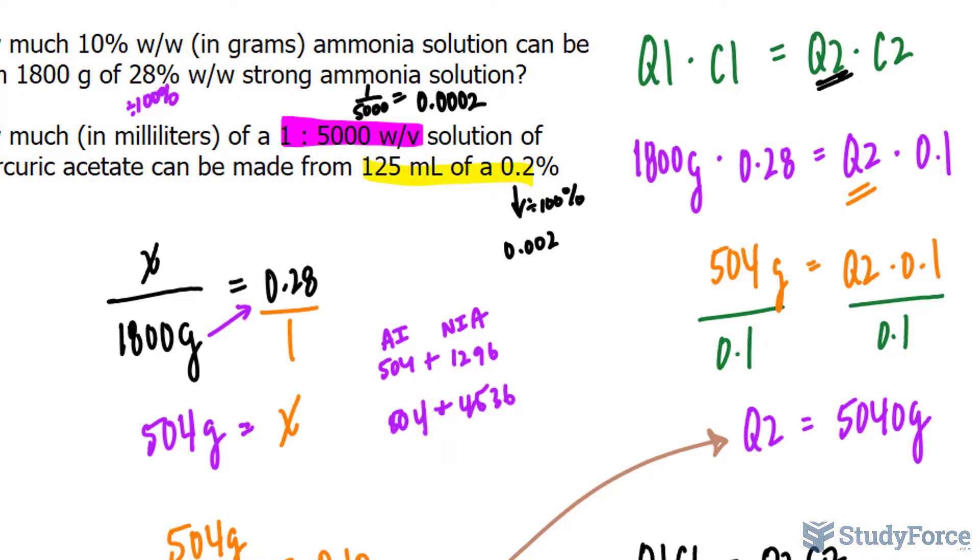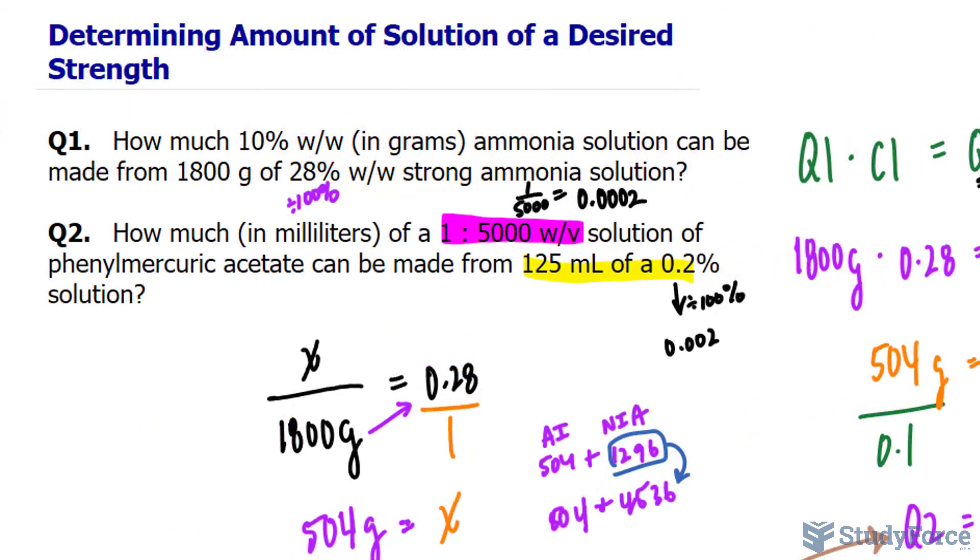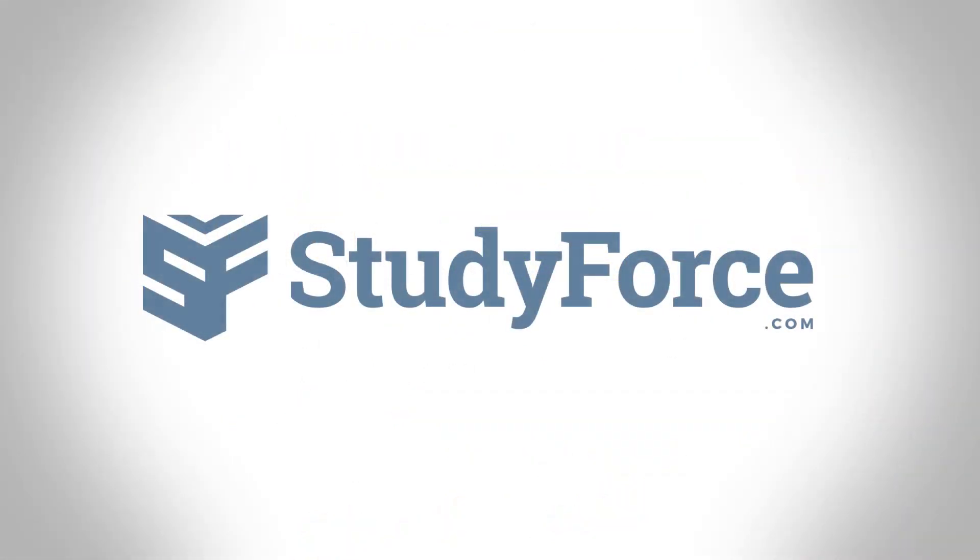So to learn how much non-active ingredient we had to add, you would simply subtract this value from 4,536, and that's how much non-active ingredient we had to add to get to 5,040 grams. So there you have it. That's how to determine the amount of solution of a desired strength.